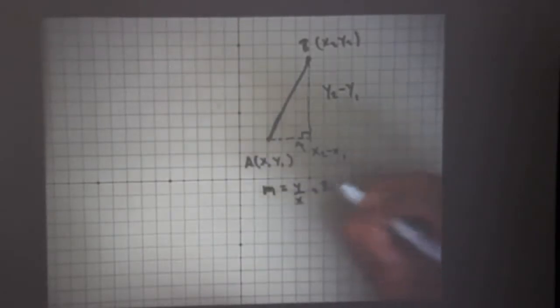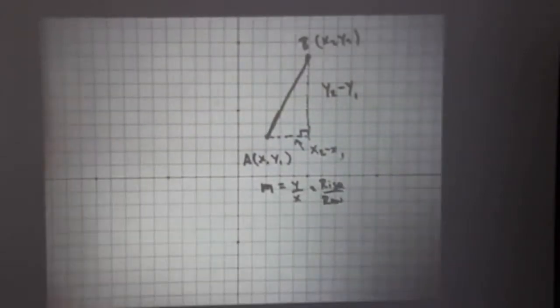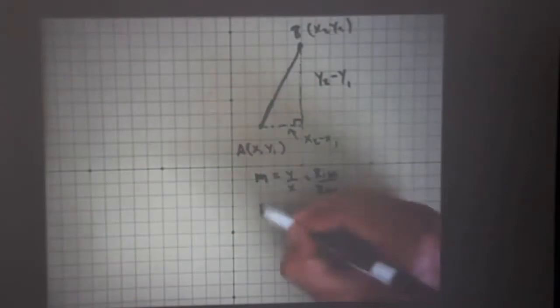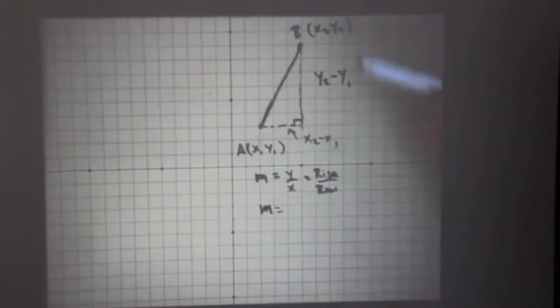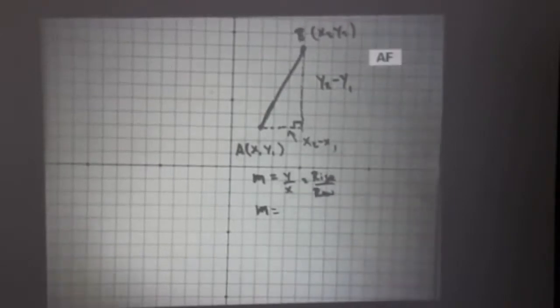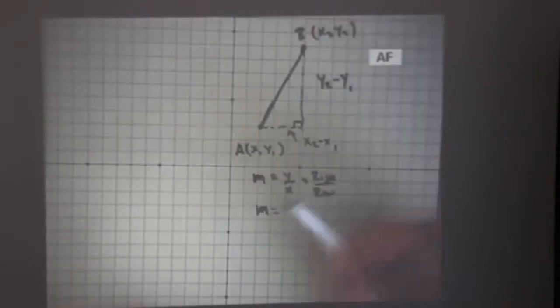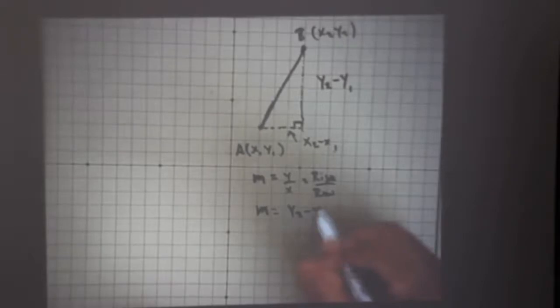Rise over run. And if I were to put those together on this particular diagram, I would have the rise portion of this is y2 minus y1, y2 minus y1 over, well, the x portion of this is x2 minus x1.